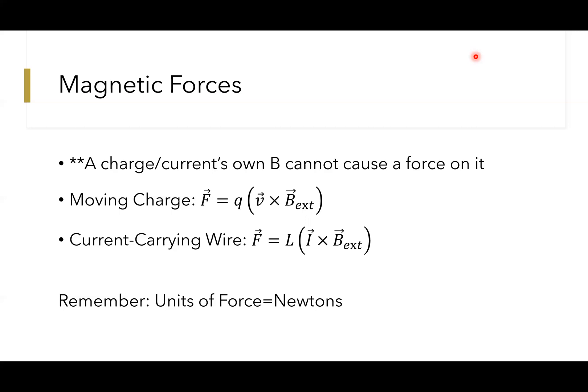Just keep in mind that the units of force is newtons. That's a throwback to kinematics, early physics, but still important. Q here in the first moving charge equation refers to your charge—remember that could be positive or negative. V is your velocity. In the second equation, your L is your length of your wire, and I of course is current.